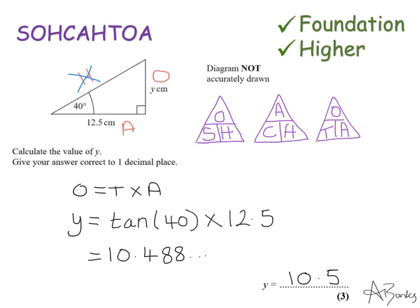I'm just going to double check that my answer seems reasonable. So I know this side here is 12.5, and I've got the answer here that this side is 10.5. I know the diagram is not drawn accurately, but it does look reasonable that that would be 10.5.